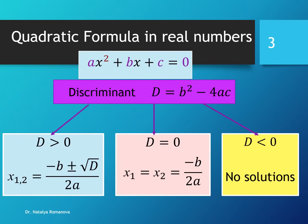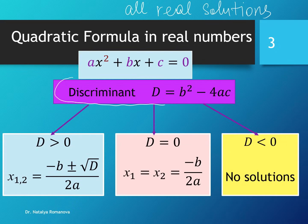We use the quadratic formula to find all real solutions. The number of roots depends on the value of the discriminant. The discriminant is a very important parameter for the quadratic equation. We can find the discriminant using the formula b² - 4ac.